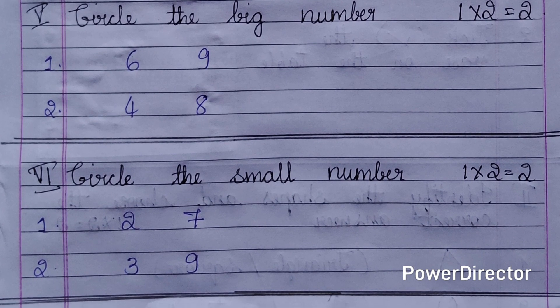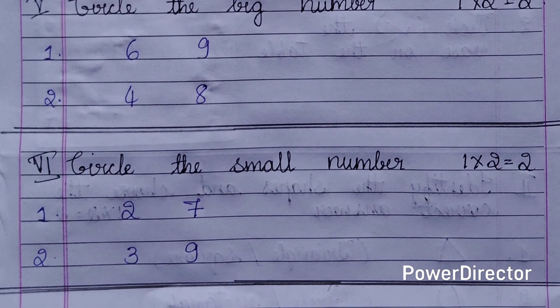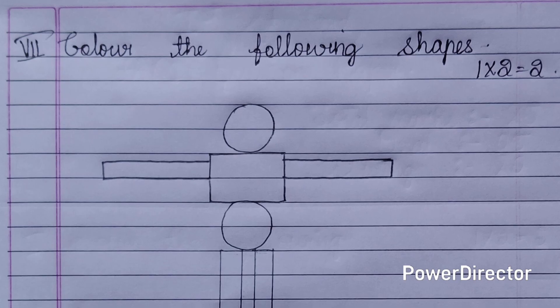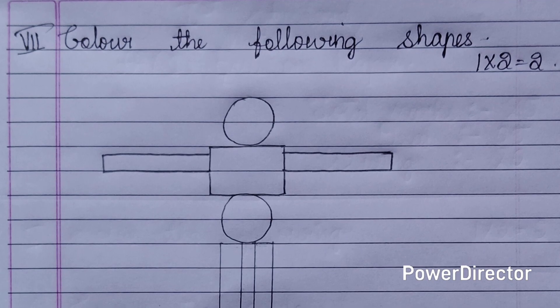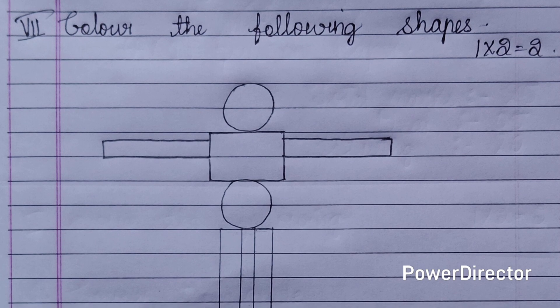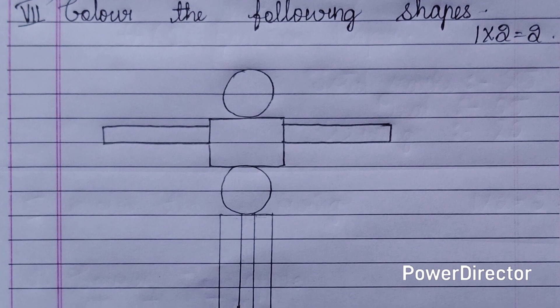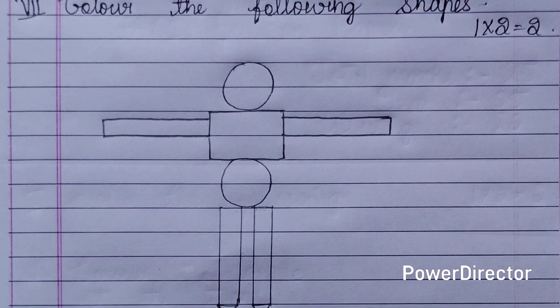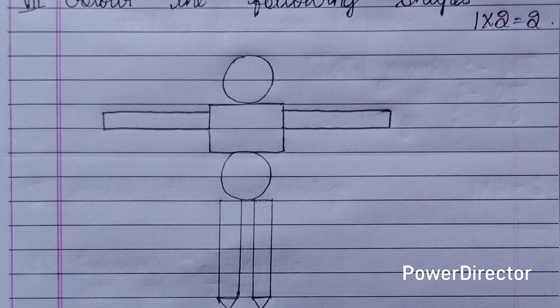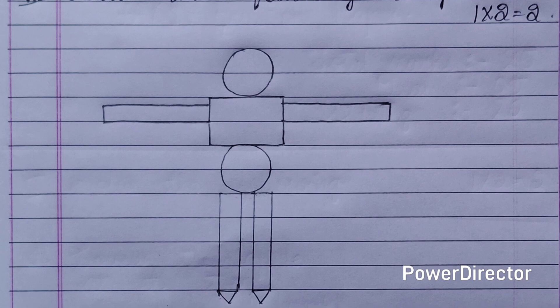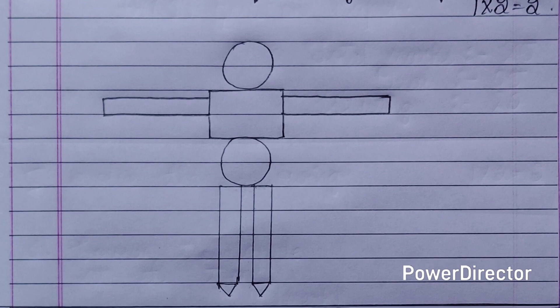If you come to the seventh main, you can see over there, only one picture I have given from the textbook and the children have to colour the given shapes. Two marks for this main.